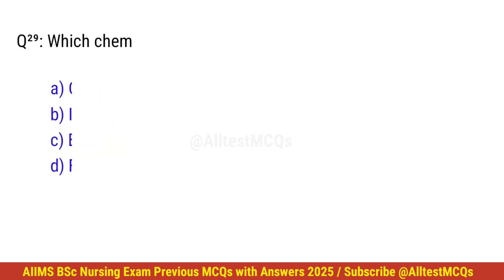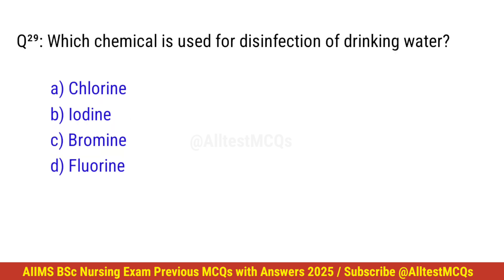Question number 29. Which chemical is used for disinfection of drinking water? Correct option is A. Chlorine.